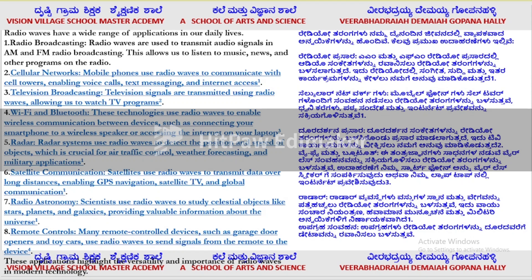Radar systems use radio waves to detect the position and speed of objects. Satellite communications — satellites use radio waves to transmit data over all distances, enabling GPS navigation, TV satellite, and global communication. Radio astronomy: scientists use radio waves to study celestial objects like stars, planets, and galaxies, providing valuable information about the universe. Remote controls: many remote control devices such as garage door openers and toy cars use radio waves to send signals from the remote to the device.